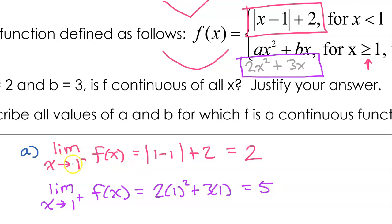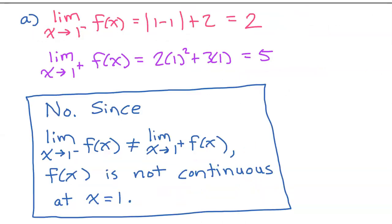Notice that the limit as x approaches 1 from the left does not equal the limit as x approaches 1 from the right. So right there we have a discontinuity. The final answer to Part A is no: since the limit from the left does not equal the limit from the right, f(x) is not continuous at x equals 1.